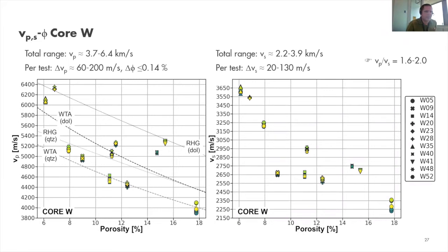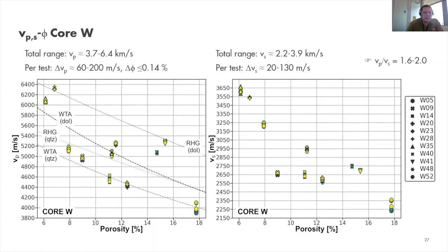For Core W — the dolomite-dominated samples — we find a total range of 3.7 to 6.4 km/s for P-wave, quite a lot more spread than the limestone. Per test, the vertical spread is a maximum of 200 meters per second and the horizontal spread is much less — 0.14 percent compared with 0.46 percent. For S-wave velocities, the total range is 2.2 to 3.9 km/s, with a maximum vertical spread of 130 meters per second per test.